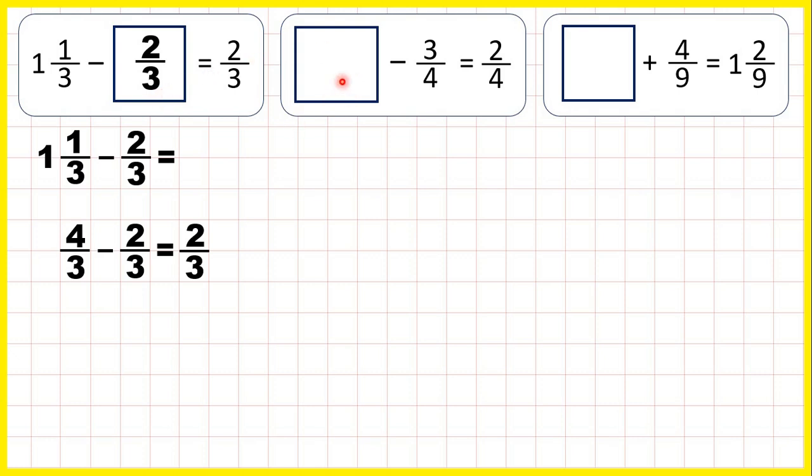Now, something minus three quarters is two quarters. Remember, subtraction problems can be read backwards as addition problems. So we can find our answer by adding two quarters and three quarters. When the first number of a subtraction problem is missing, you can use the inverse operation. So use addition to find your missing number.